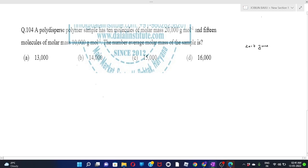The question says that a polydispersed polymer sample has 10 molecules of molar mass 20,000 gram per mole and 15 molecules of molar mass 10,000 gram per mole. The number average molar mass of the sample is.